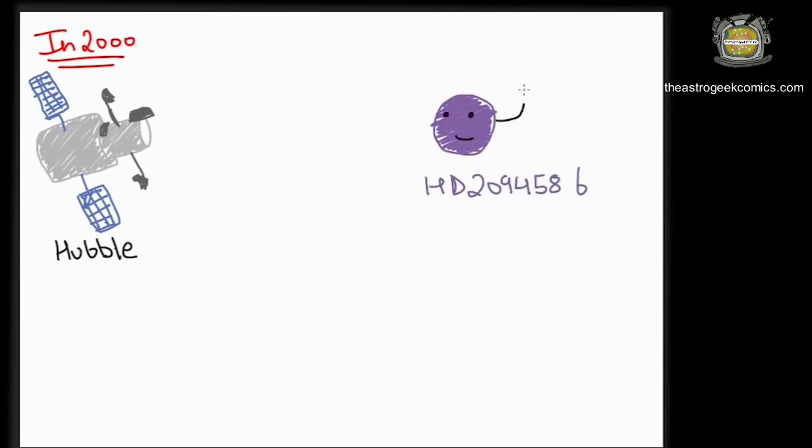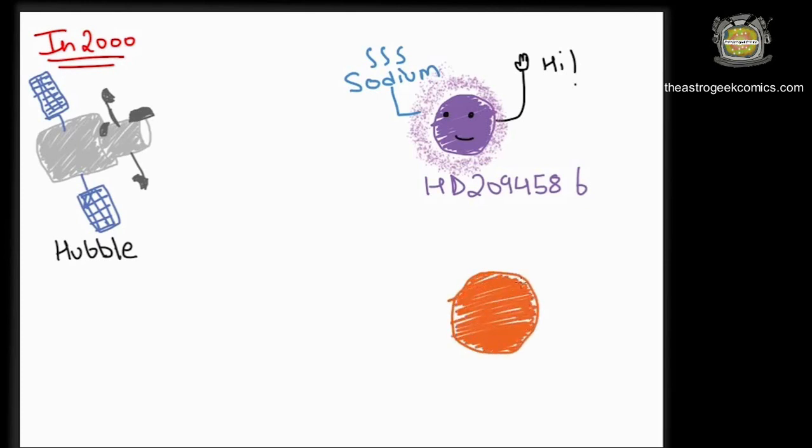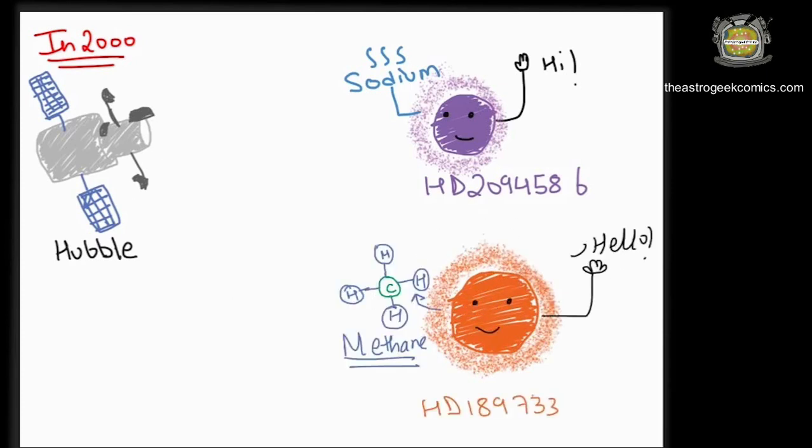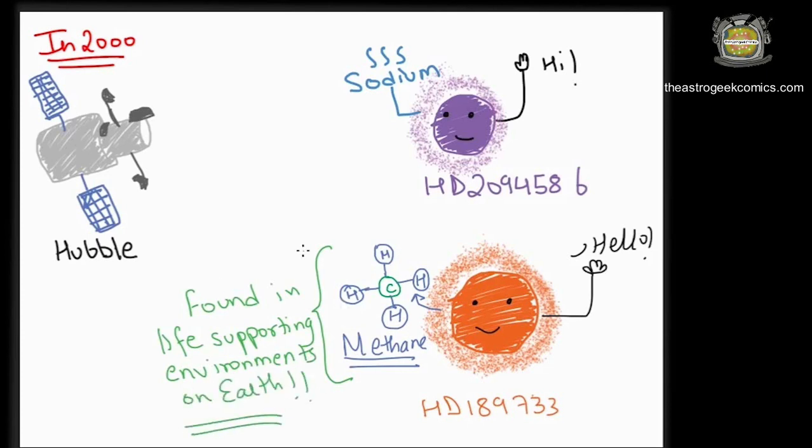In the year 2000, when Hubble studied the exoplanet 209458 b, it found sodium in its atmosphere. In the atmosphere of exoplanet HD 189733 b, located 63 light years away, Hubble detected methane. This was the first organic molecule identified in the atmosphere of a planet outside our solar system. There is again a SciArt comic explaining it on my Instagram handle.